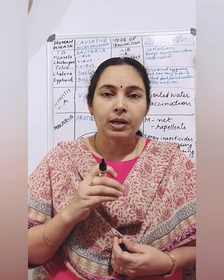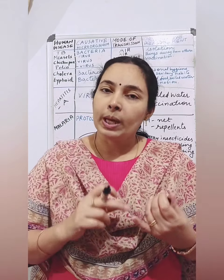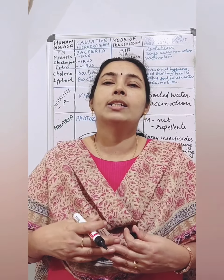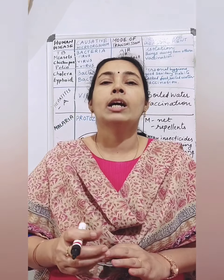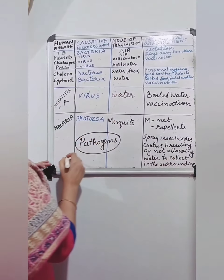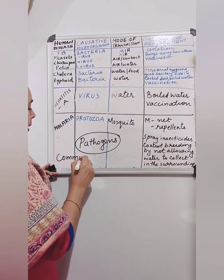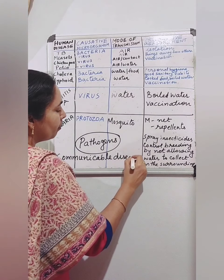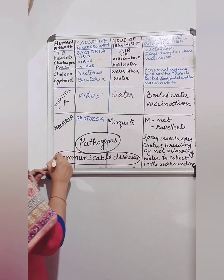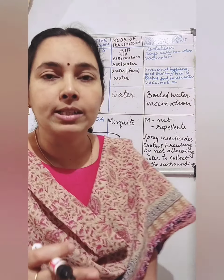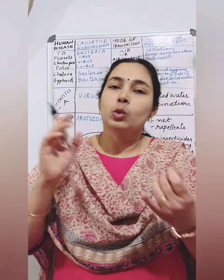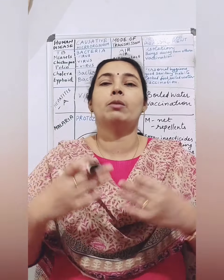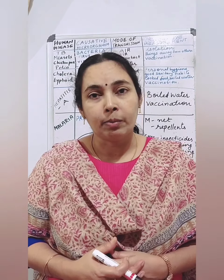The diseases that spread from one person to another through air, water, food, or through physical contact are called communicable diseases. Communicable diseases are the diseases that spread from one person to another through air, water, food, or direct contact.